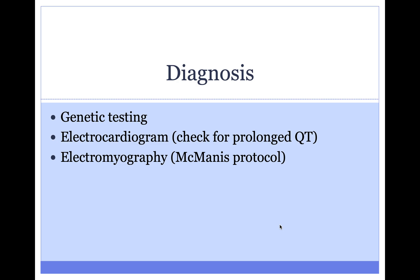To make the diagnosis of a periodic paralysis syndrome, the best test to do is to send genetic testing. You also want to consider sending the patient for an electrocardiogram to look for the prolonged QT interval seen in Andersen-Tawil, as well as electromyography via the McManus protocol, which is specific for testing periodic paralysis syndromes and can help particularly if genetic testing is negative.